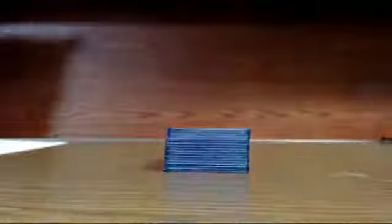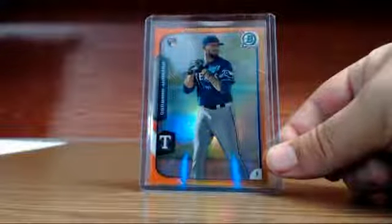Domingo Leyva Diamondbacks blue, green shimmer of Samuel Coonrod Giants. Orange Anthony Renato Texas Rangers orange, Dylan Bundy.